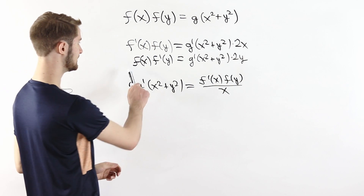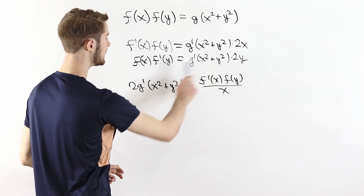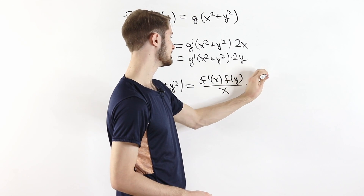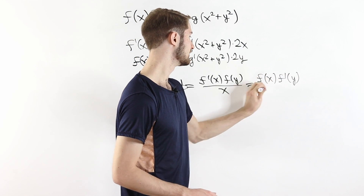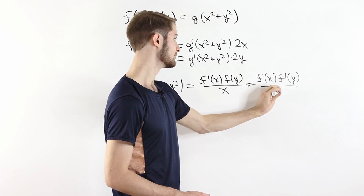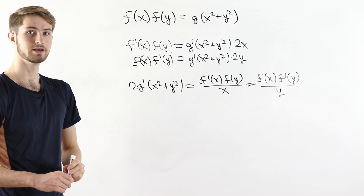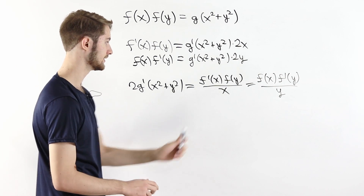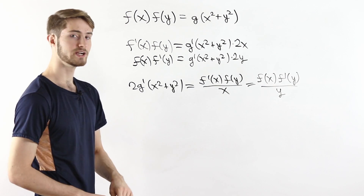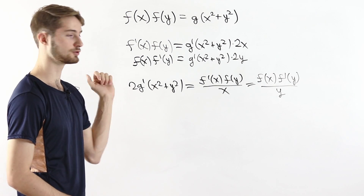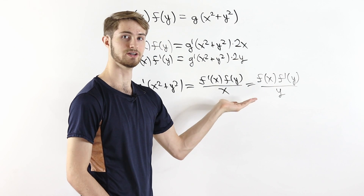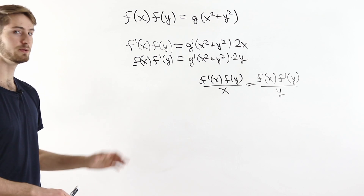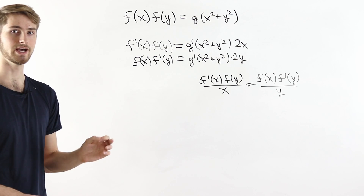From the first equation, 2 times g prime of x squared plus y squared equals f prime of x times f of y divided by x. From the second equation, dividing by y, it equals f of x times f prime of y divided by y. Because we can express g prime of x squared plus y squared in two different ways, we can remove g from the equation entirely and get something only in terms of f. Using derivatives, we've completely eliminated g and can now focus solely on f.